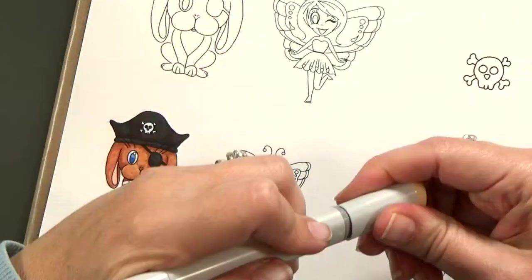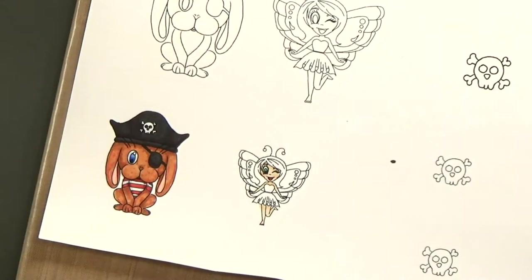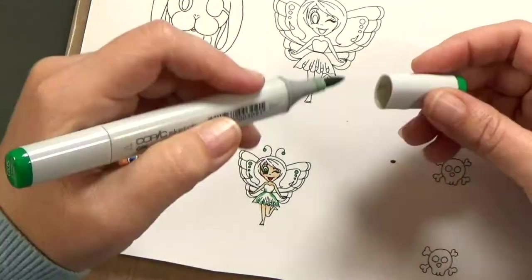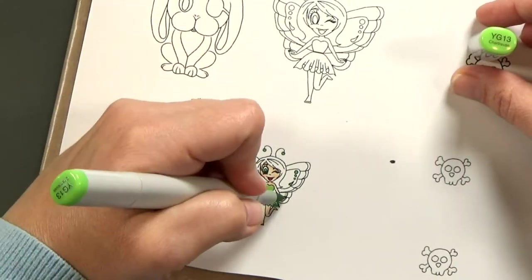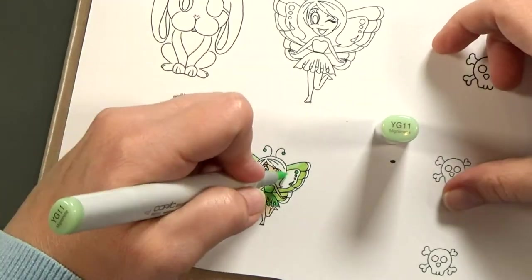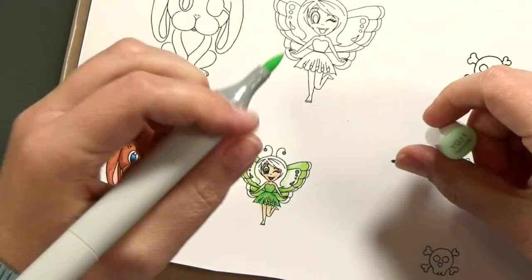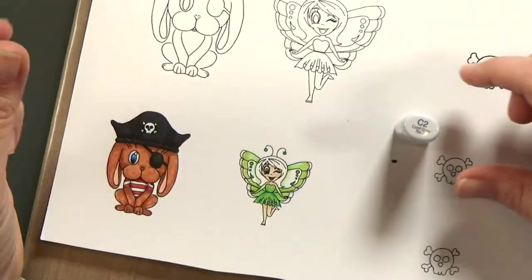After I get him all colored in, I'm going to work on the fairy. I thought she'd be kind of cute if I colored her to look sort of like Tinker Bell. Greens and blonde hair. I know my bunny isn't Captain Hook, but it kind of seemed to go together.